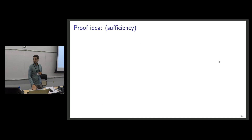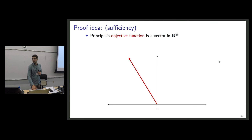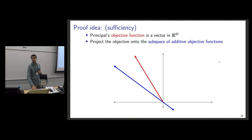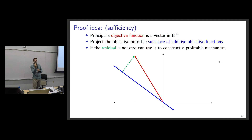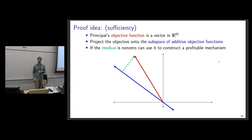Given time constraints I won't go into the proof in detail, but the basic idea is a linear regression argument. We view the principal's objective as a vector in function space, then look at its projection onto the vector space of additively separable objectives. Whenever the regression residual is nonzero, we use it to construct a profitable mechanism. That is the key idea for sufficiency; necessity is easy. Thank you.